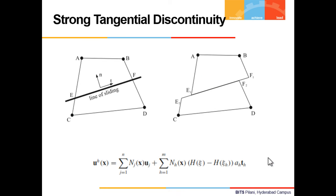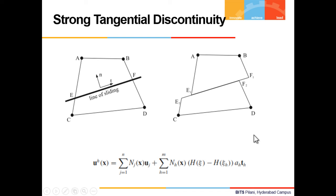Strong tangential discontinuity. In a strong tangential discontinuity, the jump exists in the tangential direction whereas the displacement remains continuous in the normal direction. The conventional approach for modeling a strong discontinuity by Heaviside function is modified to simulate the tangential discontinuity. This is achieved by defining only one extra enrichment degree of freedom per node in the tangential direction. The XFEM approximation can be written in a form where th is the tangential direction unit vector. All nodes of the finite elements that include a tangential discontinuity should be enriched by the tangential Heaviside enrichment function.